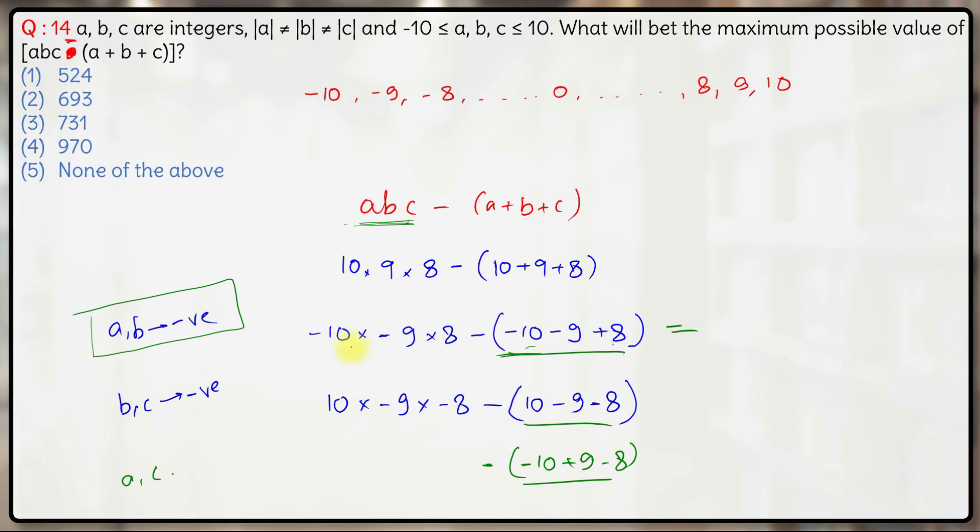Hence, the value here will be minus 10 into minus 9 into plus 8 that will be plus 720 minus of this is minus 11. So minus minus 11 is plus 11. So this comes out to be 731.